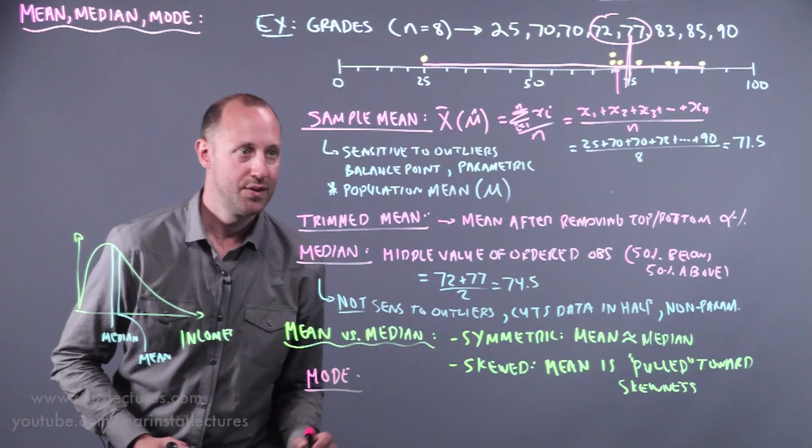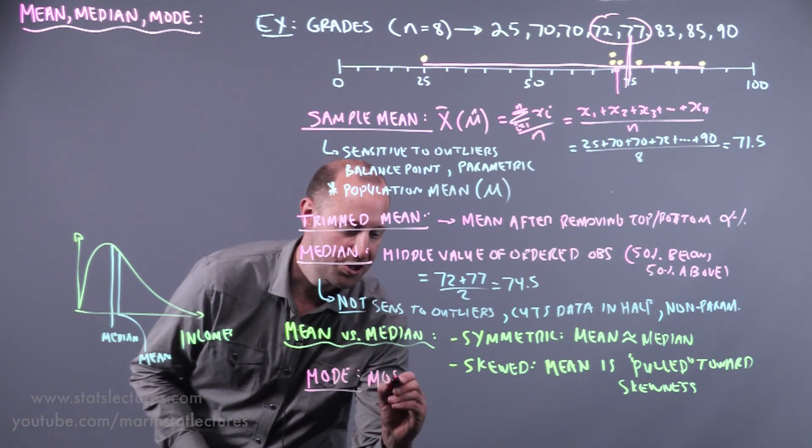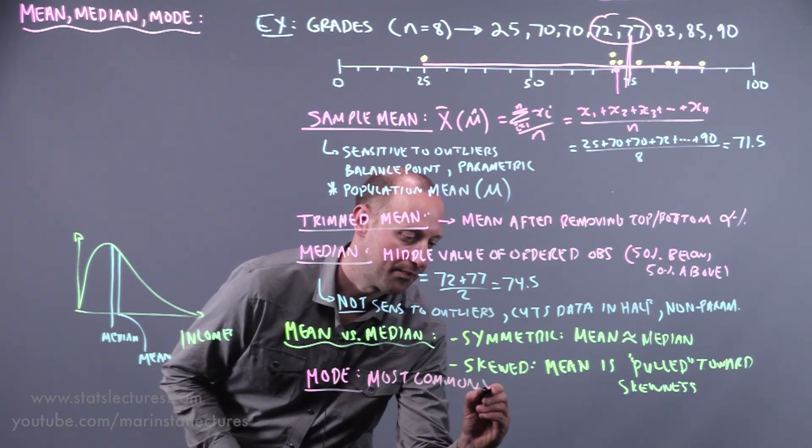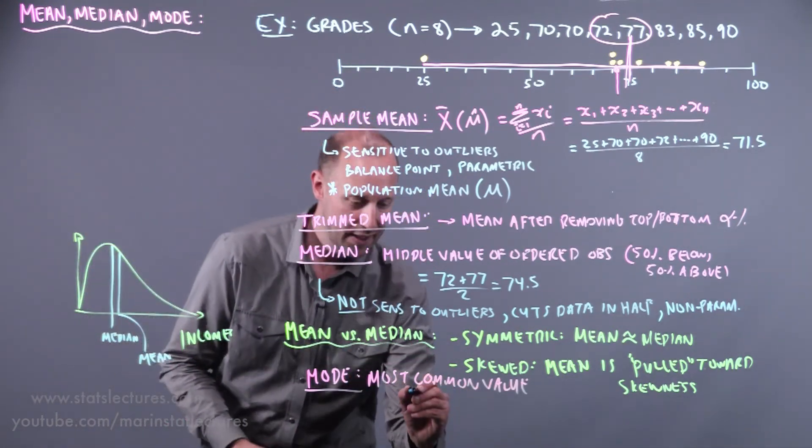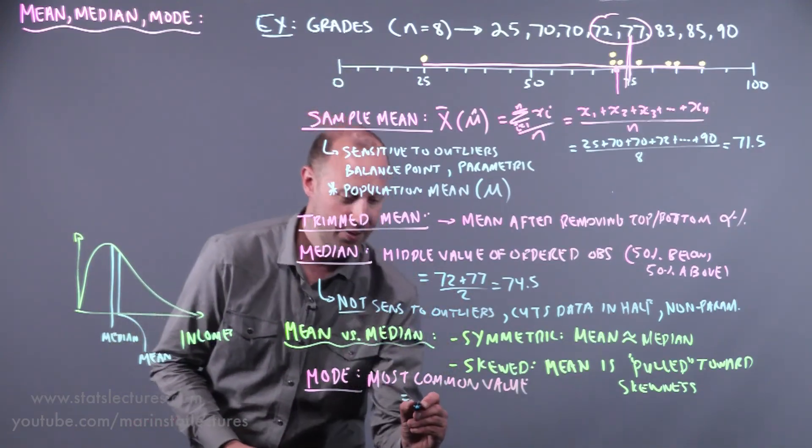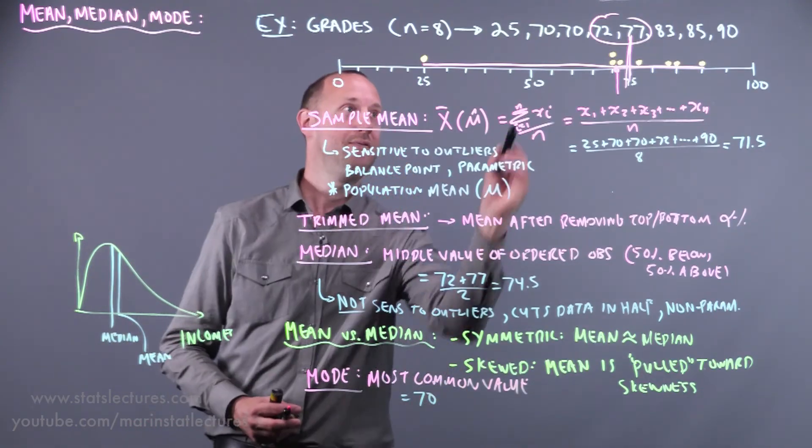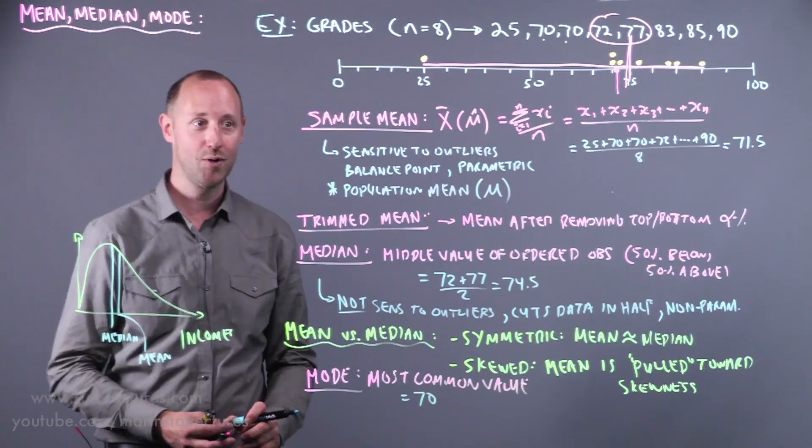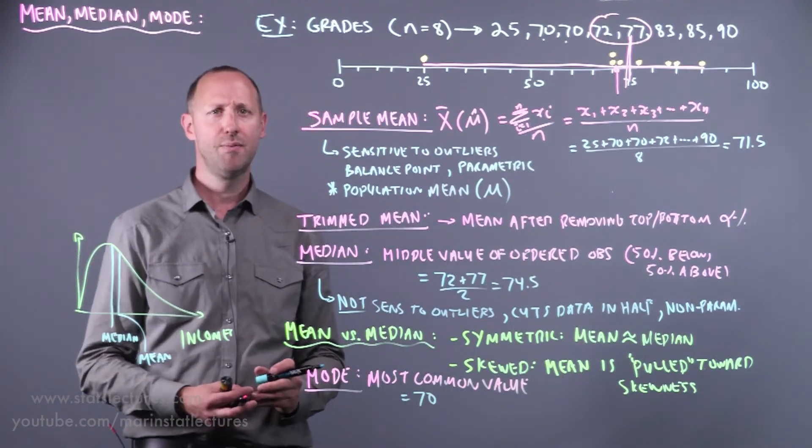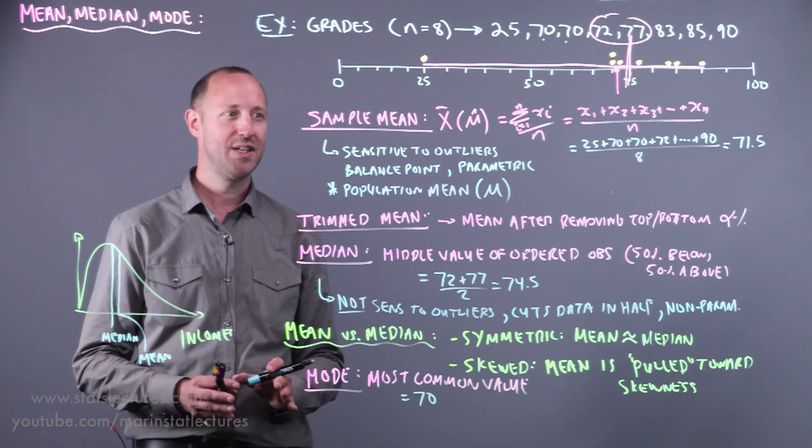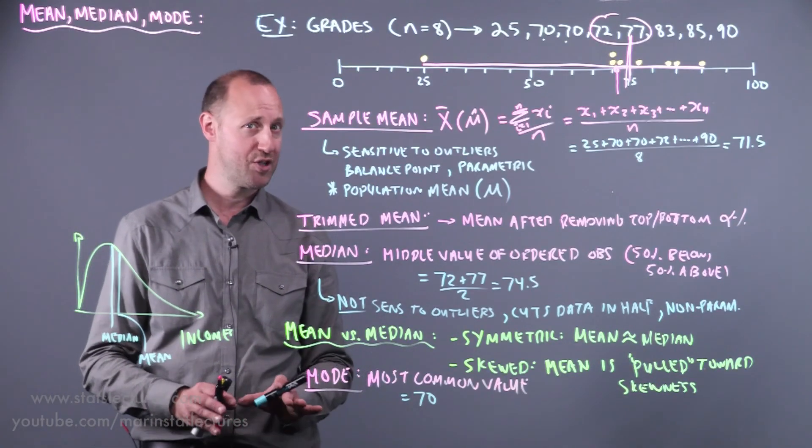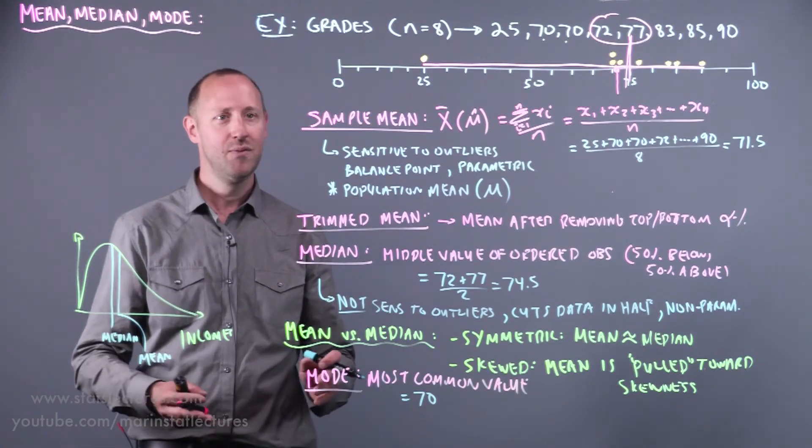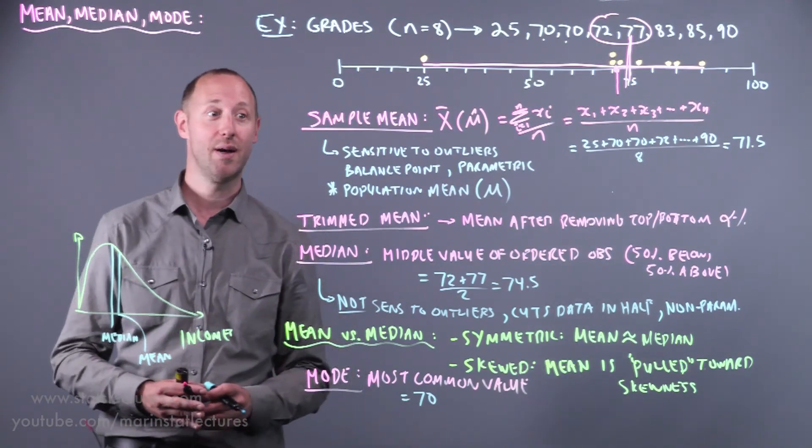The last measure of central tendency that we can talk about is the mode. The mode is the most common value. Which value is most commonly showing up in our data set? In our little simple example here, it's 70. 70 is the one that we've seen most often. So the mode is less commonly used in statistical analysis, but it can be a useful summary measure in different contexts if you want to know what value is showing up most frequently.